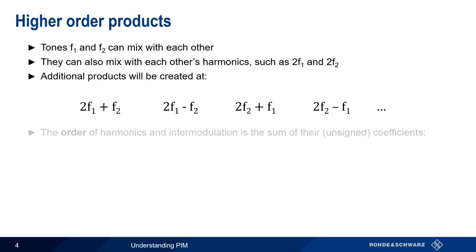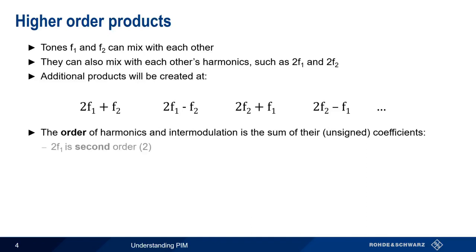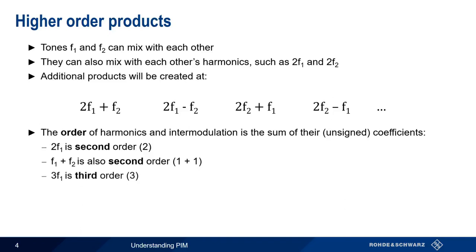We often refer to the order of harmonics and intermodulation products. Order refers to the sum of unsigned coefficients. For example, 2F1, the second harmonic of F1, is second order. F1 plus F2 is also second order. The third harmonic of F1, 3F1, is third order. And 2F2 minus F1, or 2F2 plus F1, are also third order products. Let's look at a diagram.